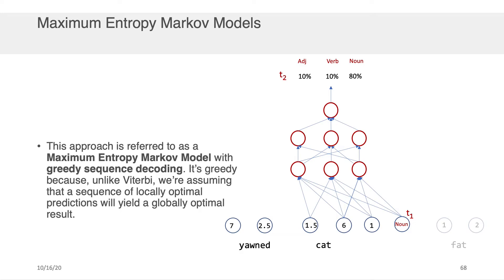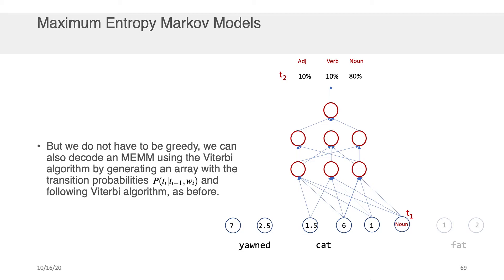That is to say, we assume that, hey, if my prediction, if the best prediction for T1 was noun, I'm not looking back once I've concluded that. I don't care if that messes up something about the probabilities of T2 or T3 in the future, given the data that I'm observing, I'm just going to stick with whatever is locally optimal at this point in time.